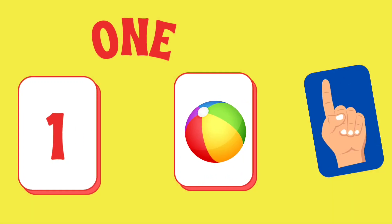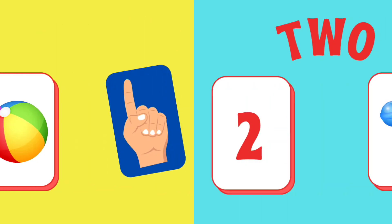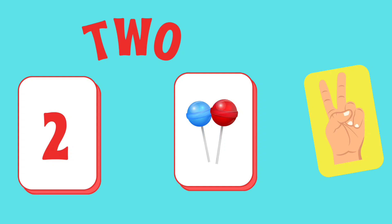O-N-E, 1. You can show your pointer finger to show 1. T-W-O, 2. Open both your pointer finger and middle finger to show 2.